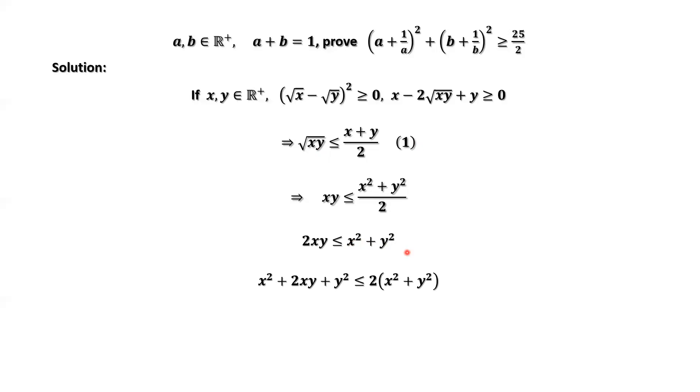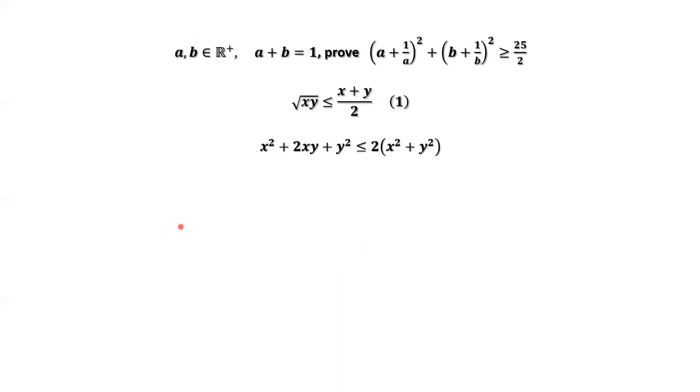Both sides adding x² + y². We have this inequality. The left-hand side is a complete square, which is (x + y)². Therefore, we have the second result.